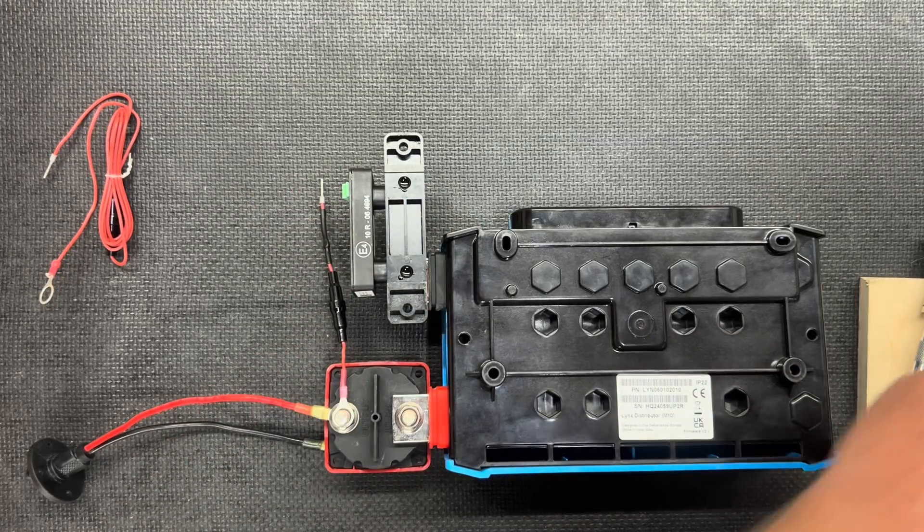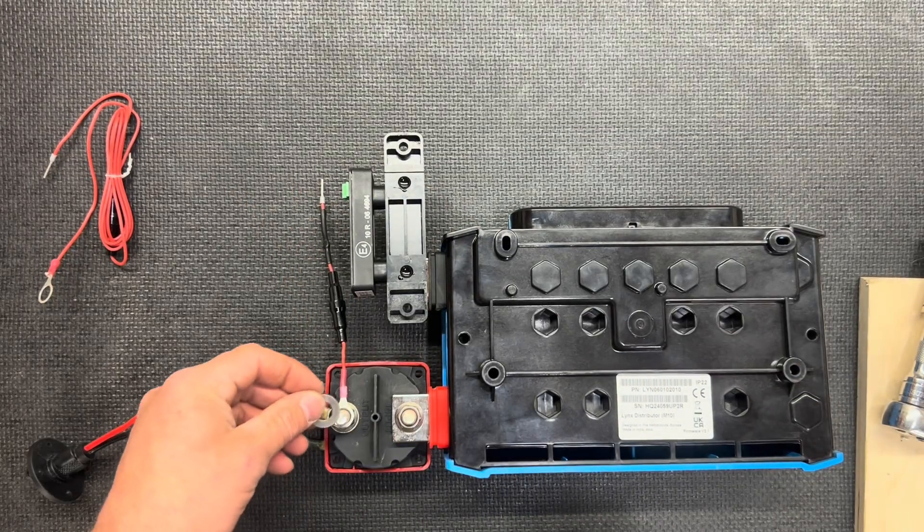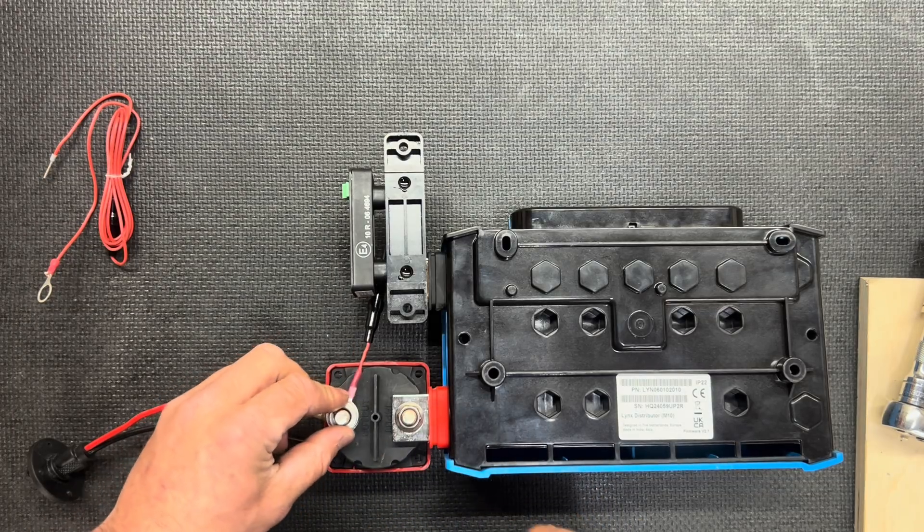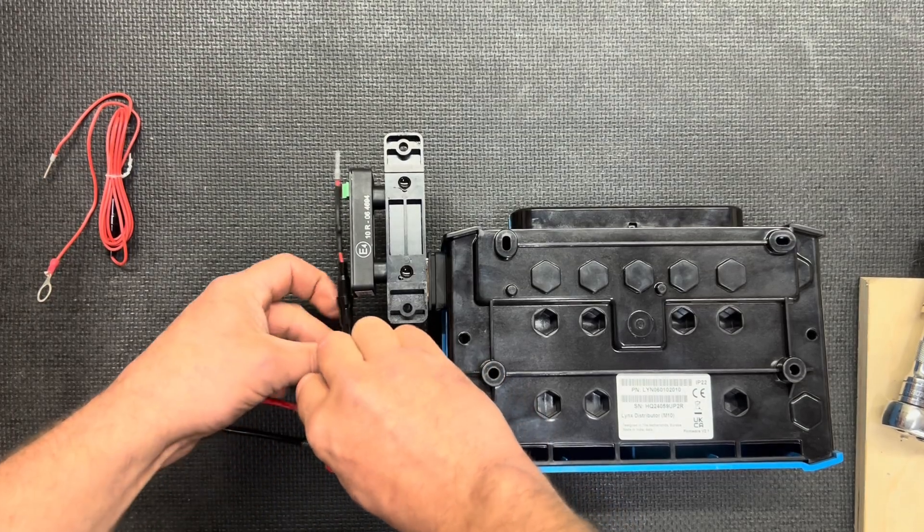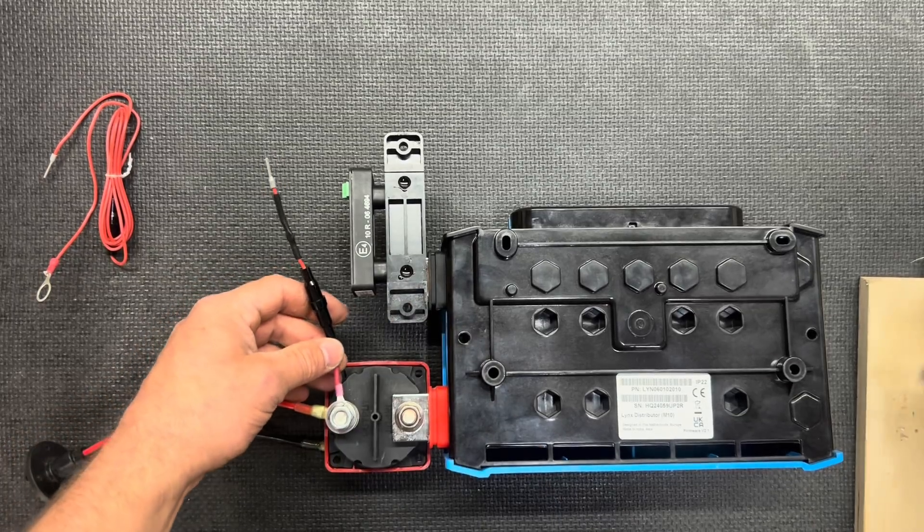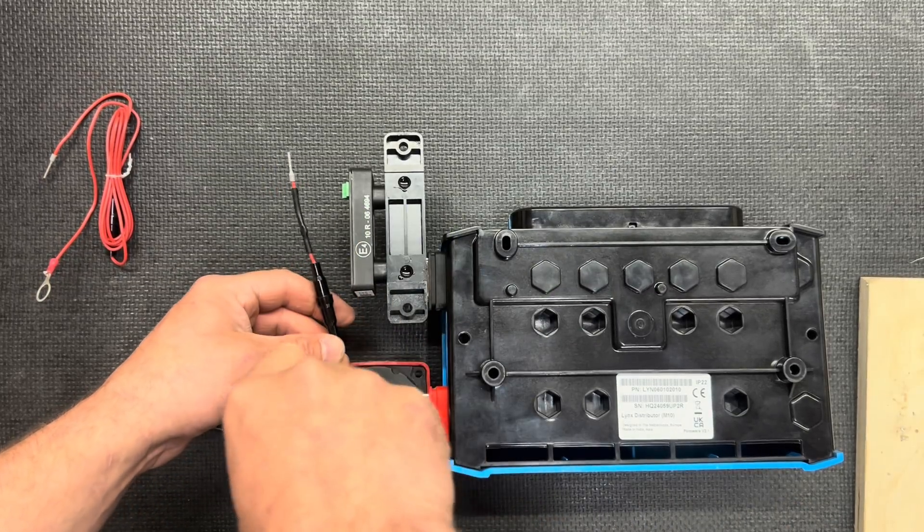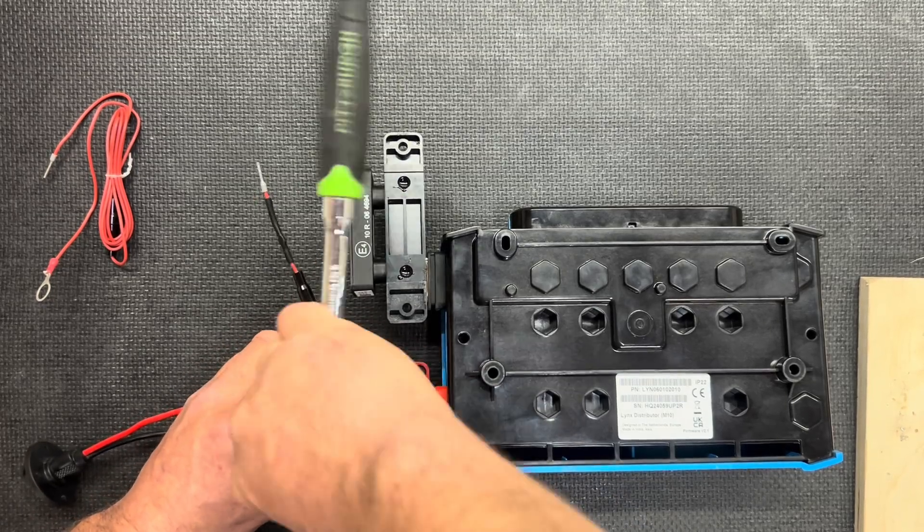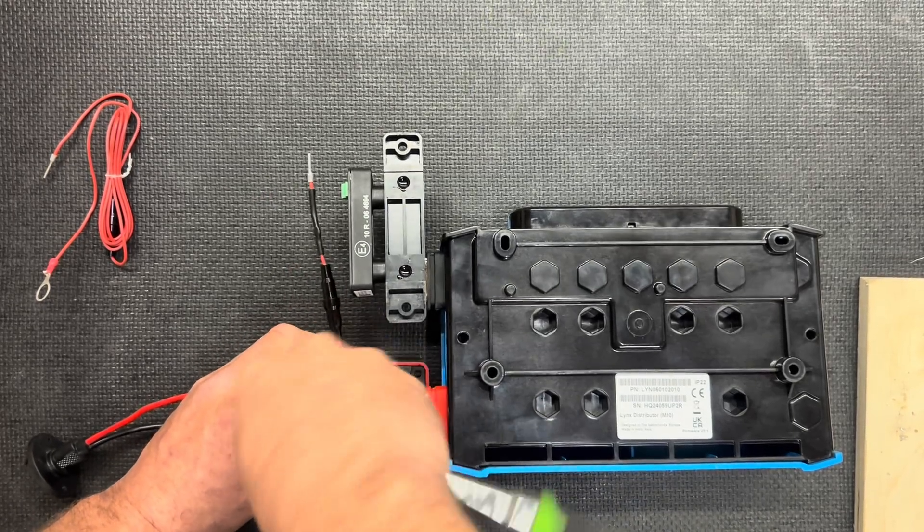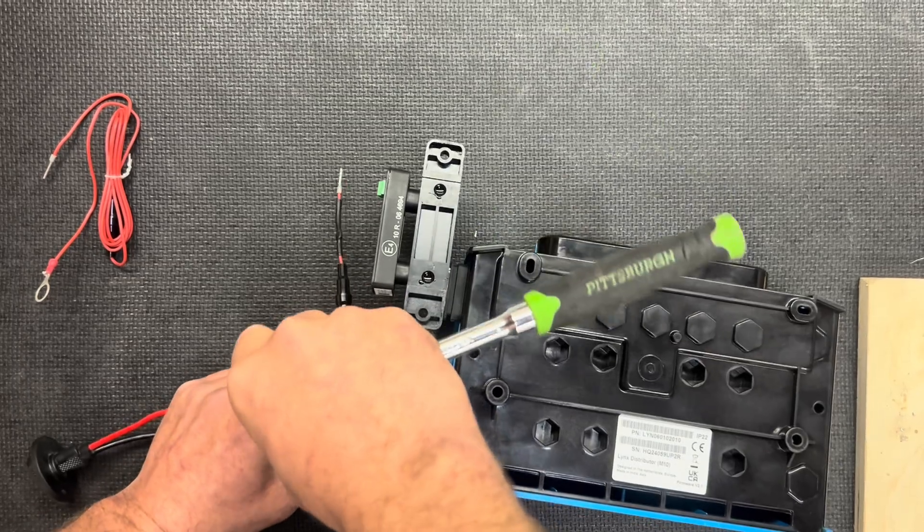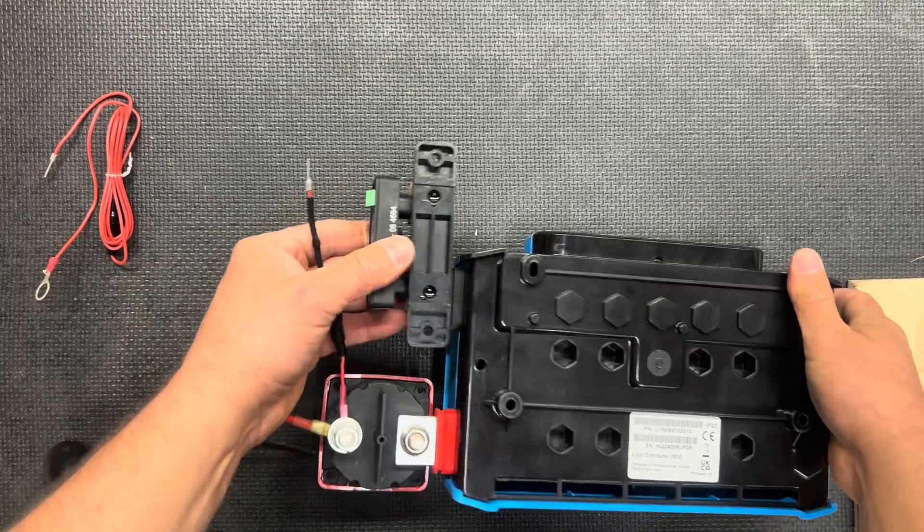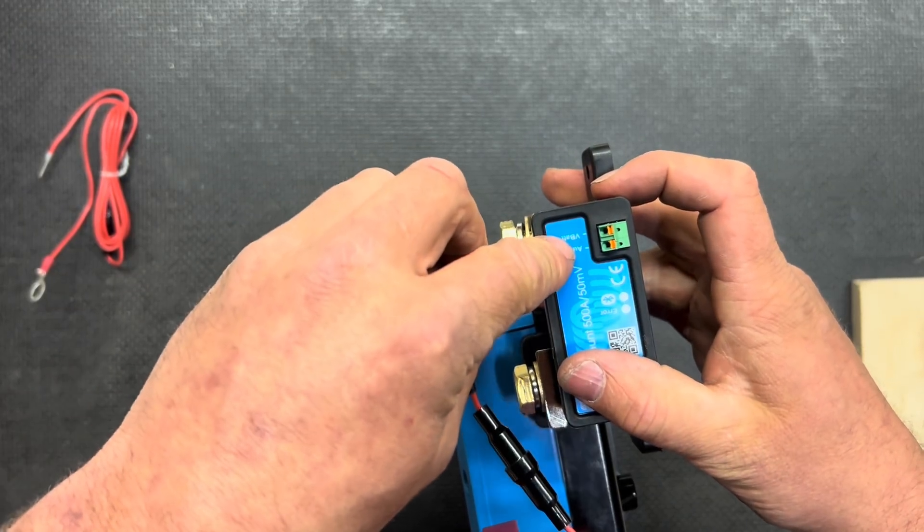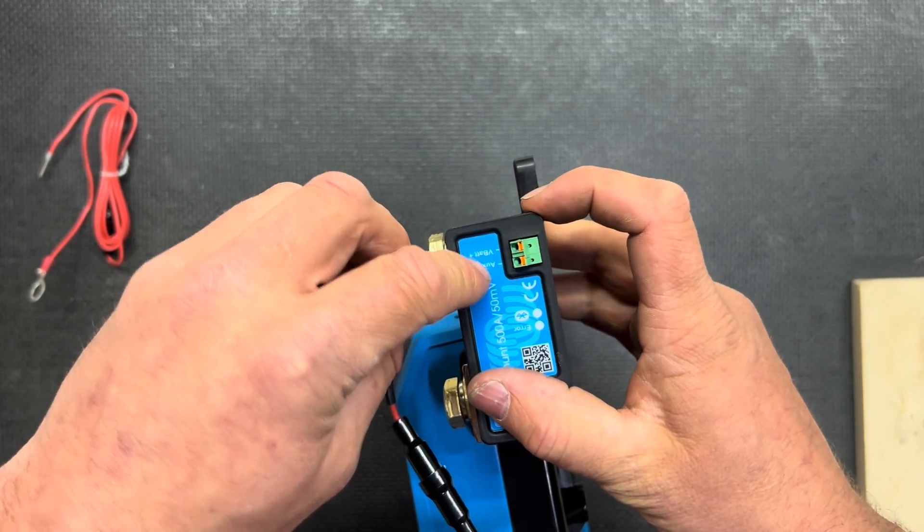I'm going to do that, follow that up with the 3/8 washer, 3/8 lock nut, tighten that down with the 9/16ths. And that's going to plug into our voltage battery on the shunt.